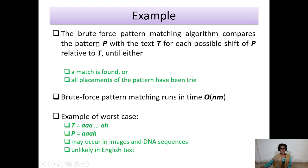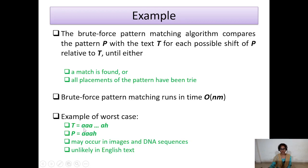For this, we have pattern P and text T. For each possible shift of P relative to text T, we follow these steps until the match is found. The time complexity for brute force pattern matching is O(nm). The best case occurs when the matching pattern substring is found at the first occurrence of the text.